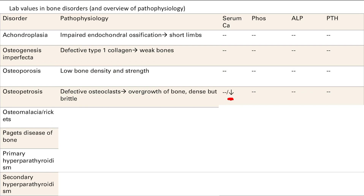Rickets and osteomalacia: low vitamin D leading to poor mineralization of osteoid, so you get soft bones. Lab values: calcium and phosphate are low because vitamin D normally increases both. ALP is elevated because that's a marker of osteoblast activity and osteoblasts are still working, dumping tons of osteoid — it's just not getting mineralized. PTH will be elevated because it responds to low calcium by increasing to try to raise calcium levels.